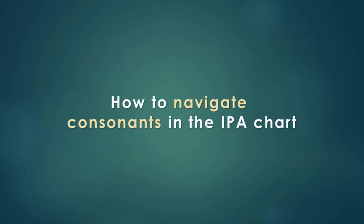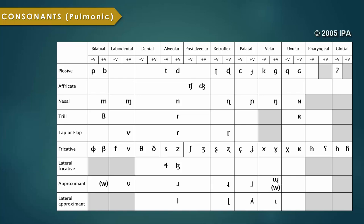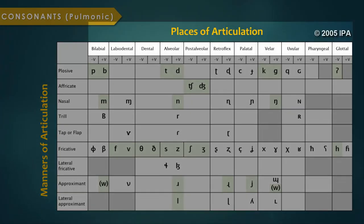So first, let's talk a bit about how to navigate the International Phonetic Alphabet chart for consonants. Here you see the IPA chart for consonants, with the sounds used in English highlighted. On the leftmost column we have the manners of articulation, while the topmost row represents the places of articulation.